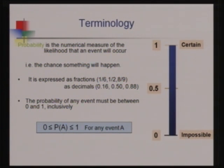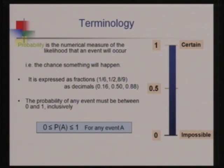The probability of an event must be between 0 and 1. If the probability of an event is 1, it is certain to happen — the event will certainly occur. If the probability is 0, it implies that it is impossible to occur; it will never happen.